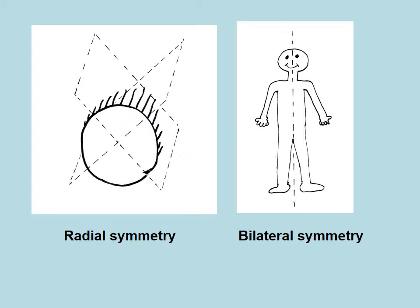Radial symmetry, if you remember, is where you can go through the center, cut on any plane, and you'll find that both halves are equal — they look exactly the same. It's just like slicing a pizza, where if you cut it in half, you'll get two equal sides. Bilateral symmetry: you can only cut it down one plane, right down the center, and you'll get equal sides. If you cut it any other direction through the center, you're going to have unequal sides.